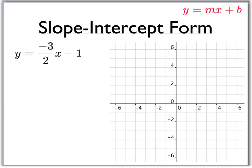First, identify the slope. In slope-intercept form, the slope is the number that's attached to the x. So in this case, our slope is negative 3 over 2.